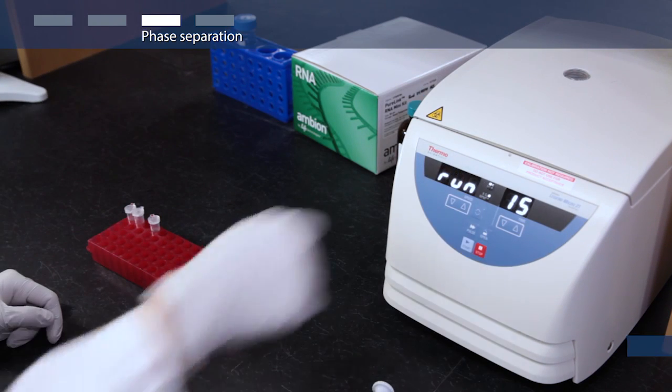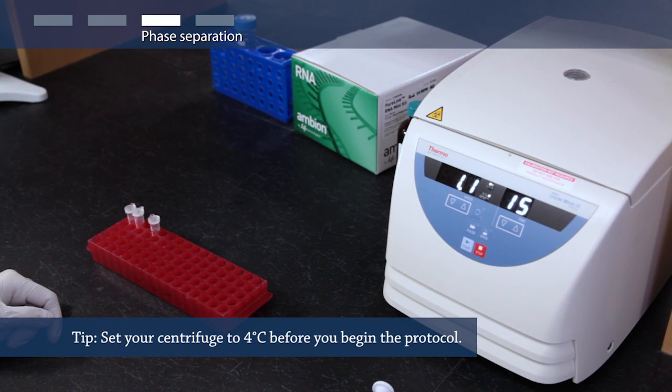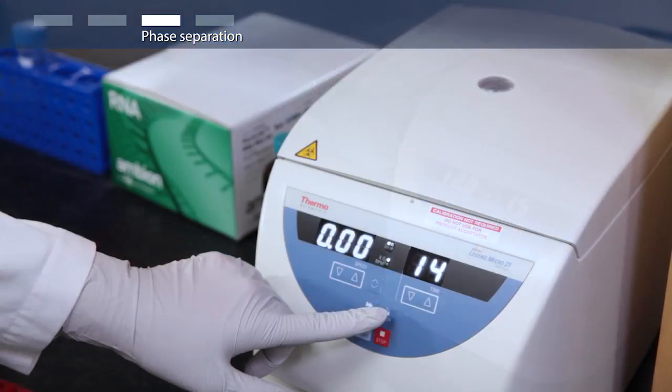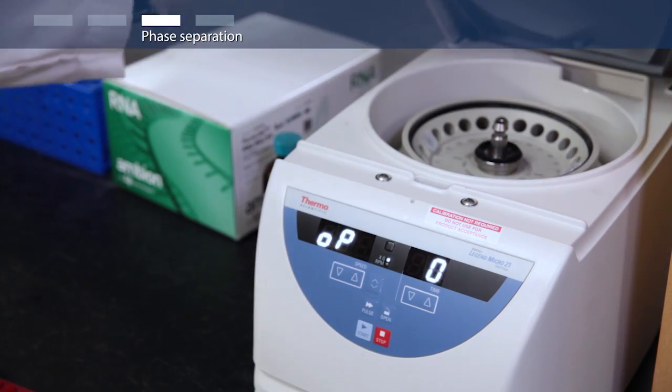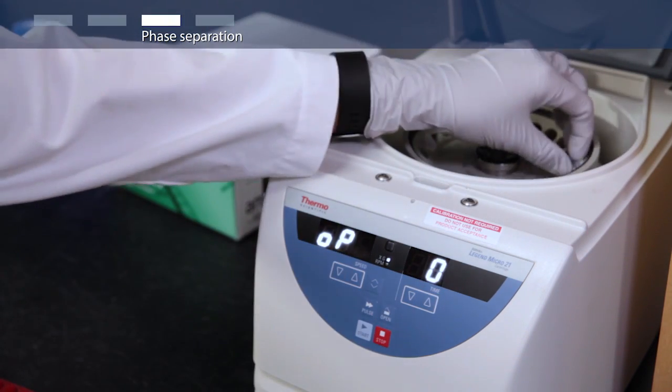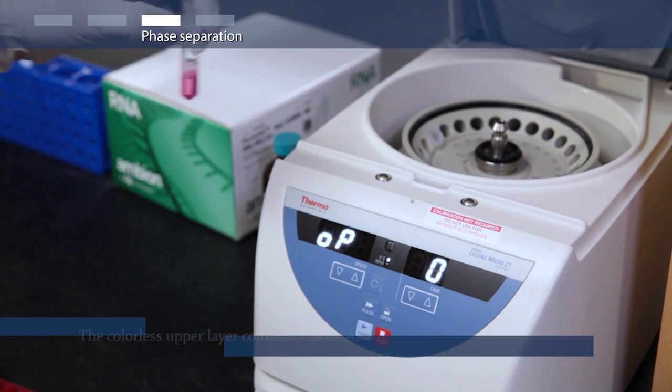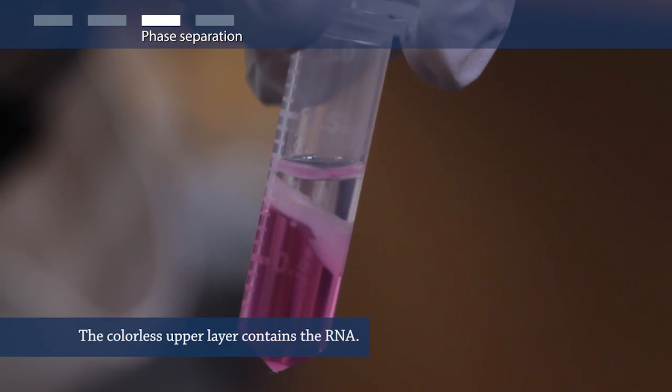Centrifuge your sample at 12,000 g for 15 minutes at 4 degrees Celsius. You will see three different layers in the tube. The colorless upper layer contains the RNA.